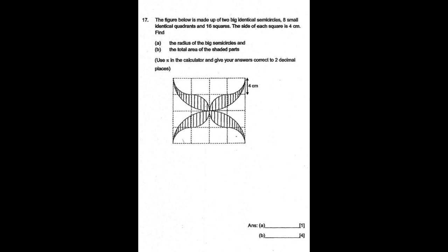The figure below is made up of two big identical semicircles, eight small identical quadrants, and 16 squares. The side of each square is four centimeter. Find the radius of the big semicircle. That's part a of the question. And part b is to find the total area of the shaded parts.